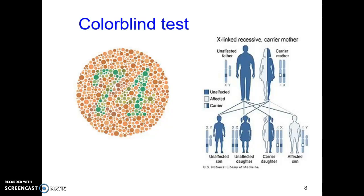Here's a simple colorblind test: if you can look at this and read the number 24, you can distinguish red and green. Every semester when I show this slide, I have one or two students per class who raise their hand and say they can't see it — and they're always guys. It's always been a guy who couldn't read it because they can't distinguish red from green. There is a big spectrum of colorblindness, from not distinguishing shades of a color to complete inability to differentiate red versus green.